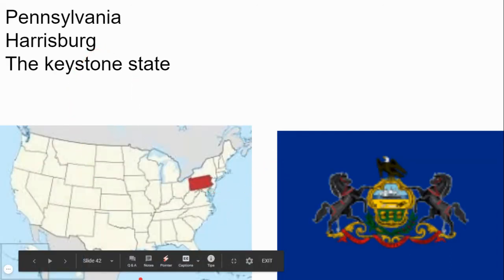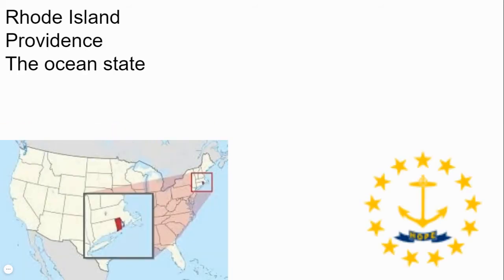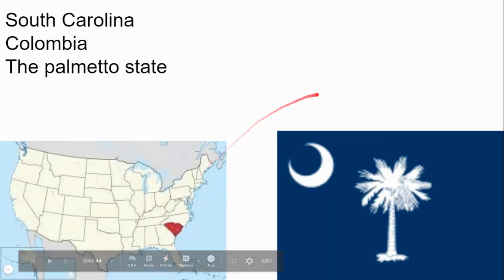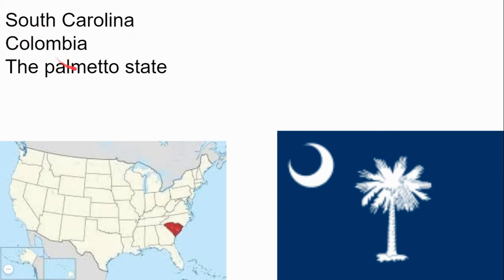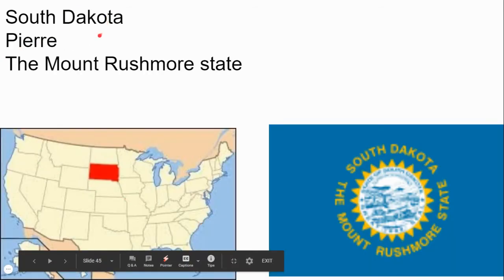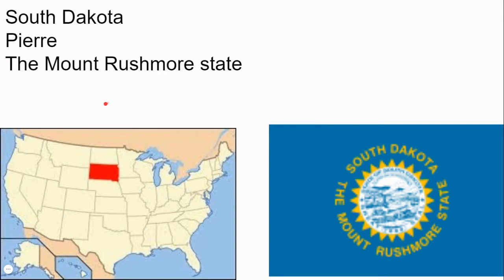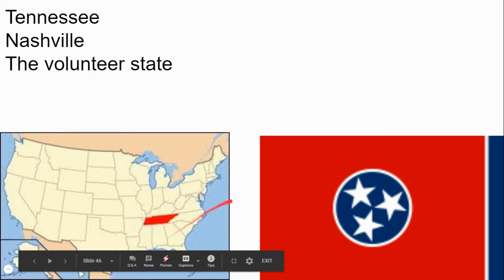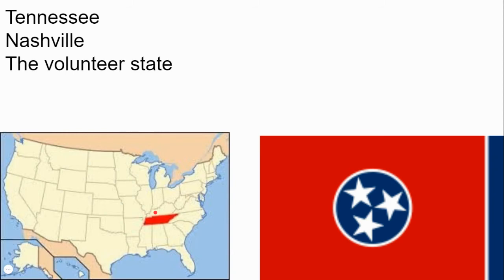This state is Pennsylvania with Harrisburg as its capital and the Keystone State is its nickname. This state is Rhode Island and its capital city is Providence — it's so small that I zoomed in on it — and the nickname is the Ocean State. This state is South Carolina with Columbia as its capital and the Palmetto State. This state is South Dakota and its capital is Pierre and the Mount Rushmore State — and Mount Rushmore is located in South Dakota.